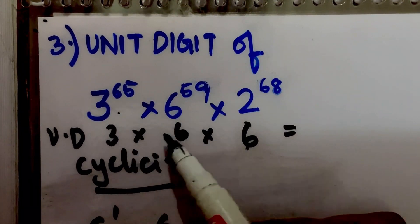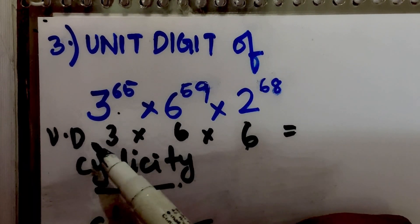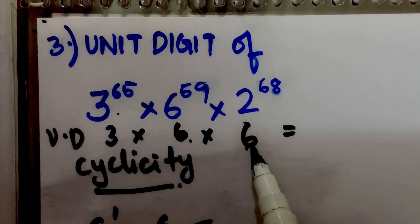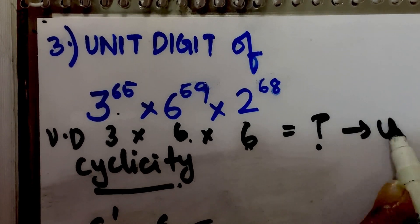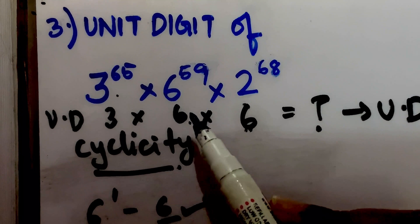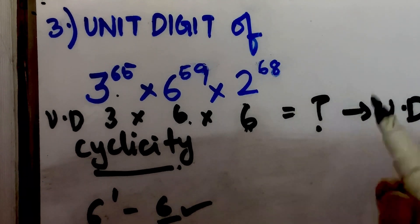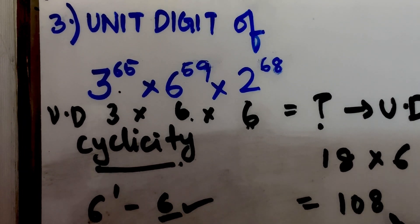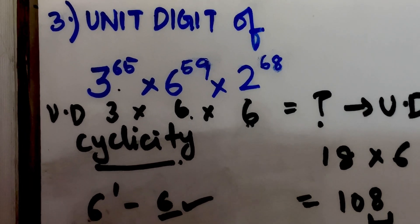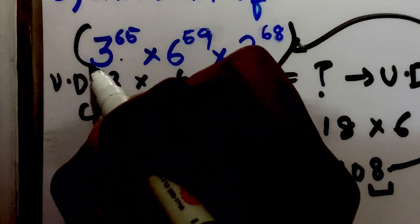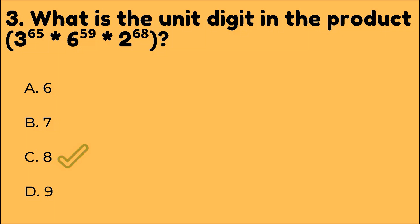Individually, 3, 6, and 6 are the unit digits respectively of these 3 terms. When we multiply them, the resulting unit digit will be the unit digit of the final result. So 3 into 6 is 18, 18 into 6 is 108. 108's unit digit is 8. So 8 should be the unit digit of this entire term. Looking at the options, option C is the correct answer.